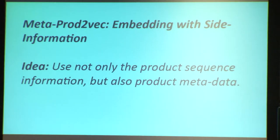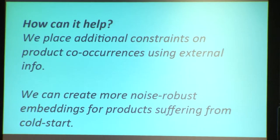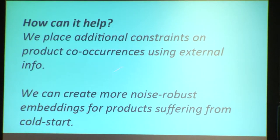Now let's go over our method. The main idea is: why should we throw away the product metadata when we do the product embeddings? We have the product sequence, so we're looking at IDs and their co-occurrences, but can we do something with the metadata? We should look at cold start, because the sequence information there will be sparse — some products will never co-occur, but there are other things about them in the metadata that could prove useful to regularize. We place additional constraints on the product embeddings using external information, creating more noise-robust embeddings for products suffering from cold start, in areas with low counts.